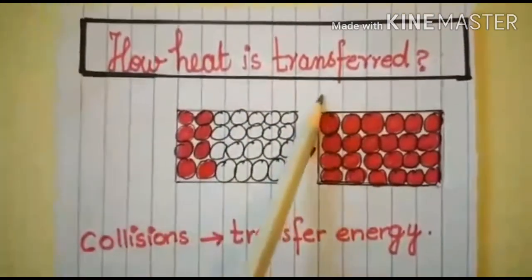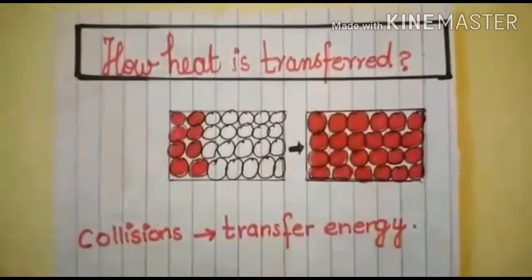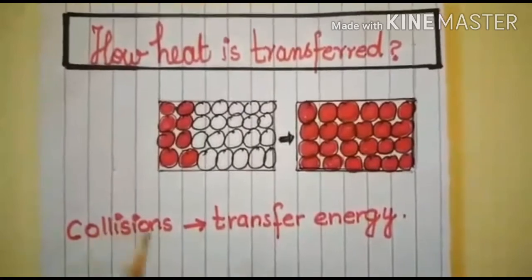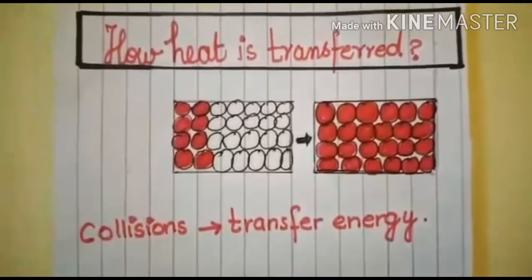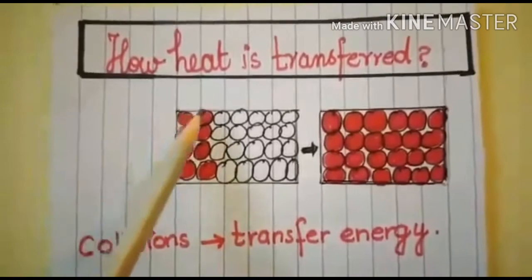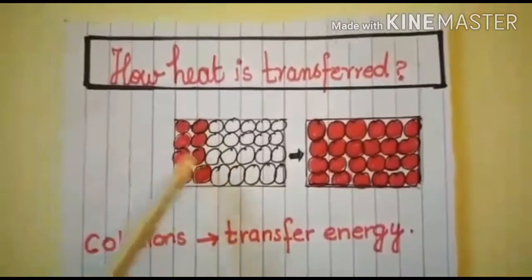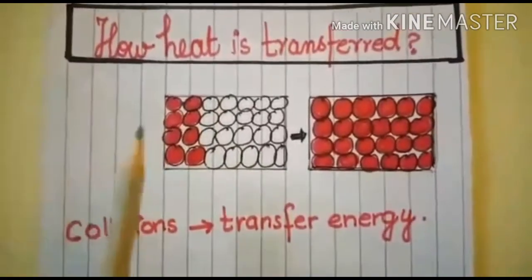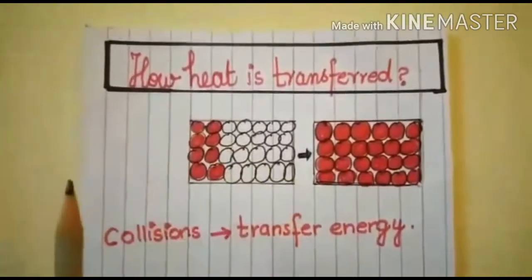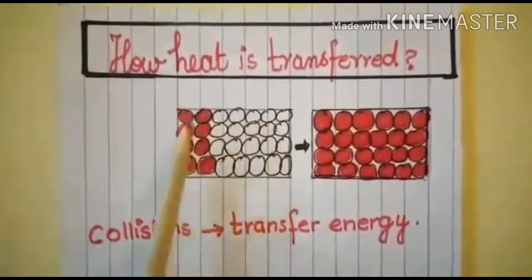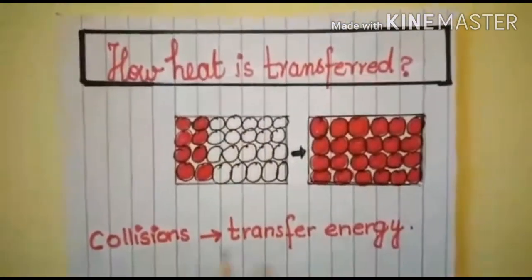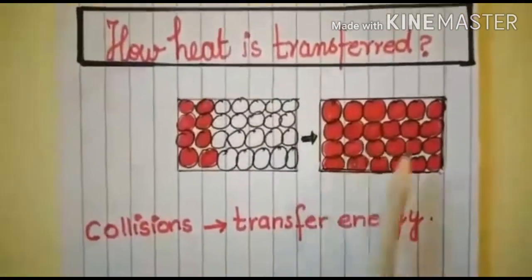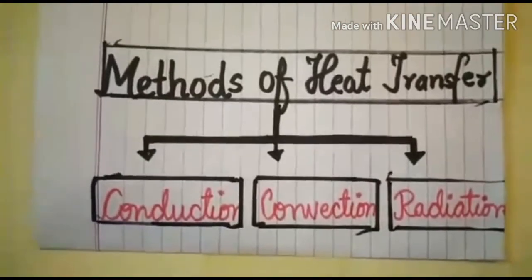Now the question arises: how is heat transferred? If we recall our previous knowledge of the particle model, you have studied that the particles present inside every object are vibrating at their position, and these vibrations cause collisions. The collisions between these particles are actually transferring energy from one part of the object to the other.